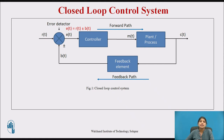This error signal is modified by the controller, which decides the proportional manipulated signal M(t) for the process to be controlled. This manipulation is such that the error approaches zero, and then this signal actuates the actual system to produce a controlled output C(t).